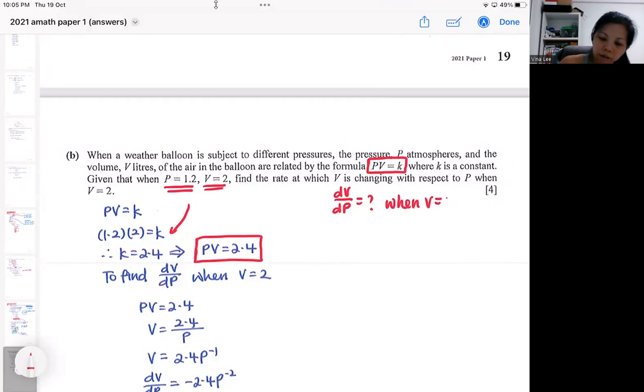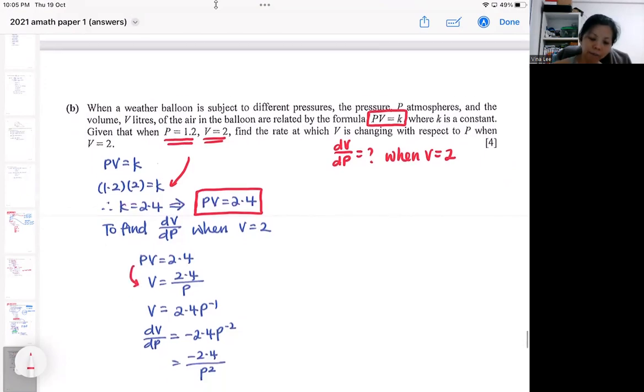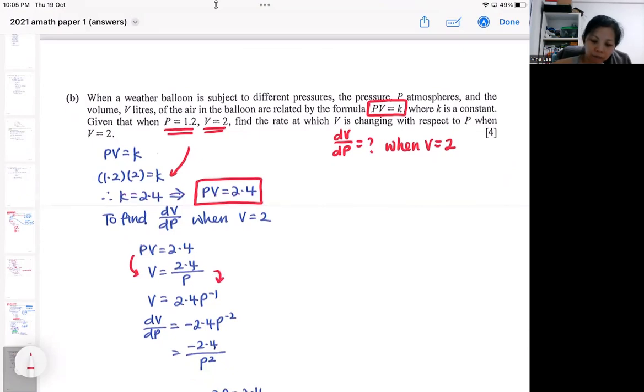However, a lot of students will get stuck. They wouldn't know how to get dV/dP. In order to get dV/dP, you need to differentiate. You need to have V as a subject first. So the critical step is making V as a subject. You got to divide the P over and then apply your indices. That means you see this as 2.4 times 1 over P. And that's how the 1 over P becomes indices. You got to have V as a subject, then you can do your differentiation.